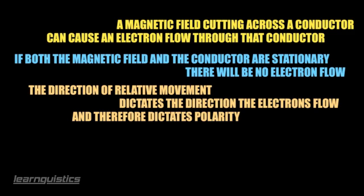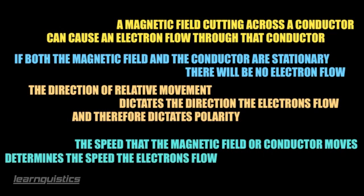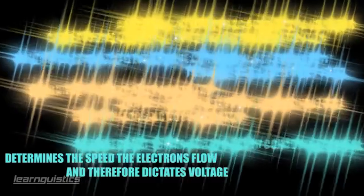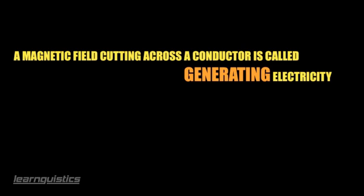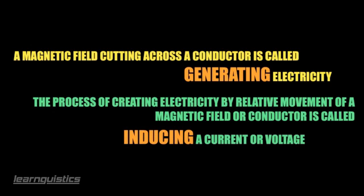There is one other important thing to note: if the wire is moved more quickly, this means that the relative movement between the magnetic field and the electrons in the wire is also faster, and this causes the electrons to move more quickly, thus producing an increase in the current flow and the voltage. If the wire were therefore moving more quickly, the voltage reading shown in our example would be higher. Having established how an electric current can be produced, we should use the correct terminology. When a magnetic field moves or cuts across a piece of wire or conductor to create an electric current, we tend to use the term generating electricity. But this process of creating an electric current by relative movement of a magnetic field and a conductor is in fact known as inducing a current or voltage, which we are going to look at in more detail in the following sections.